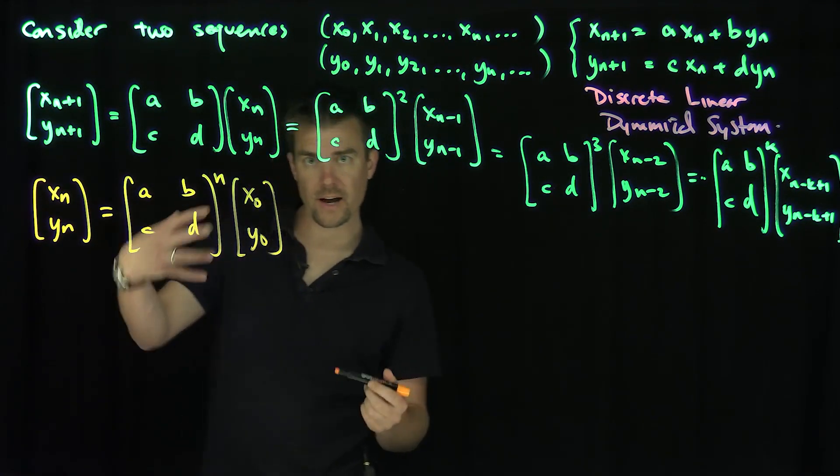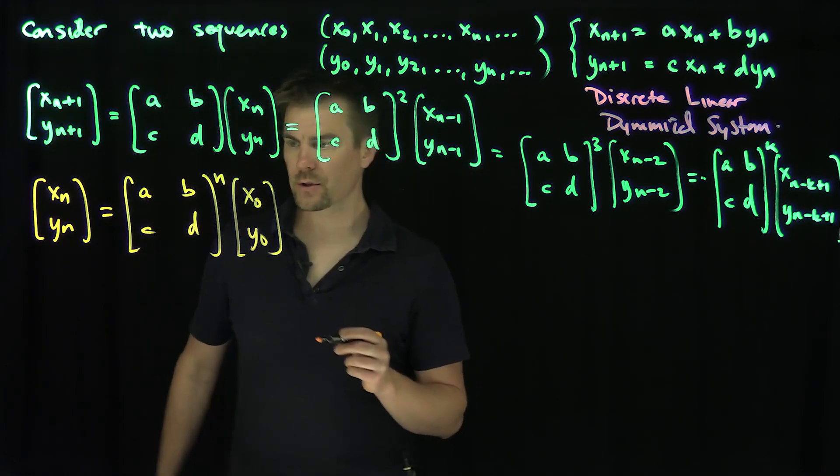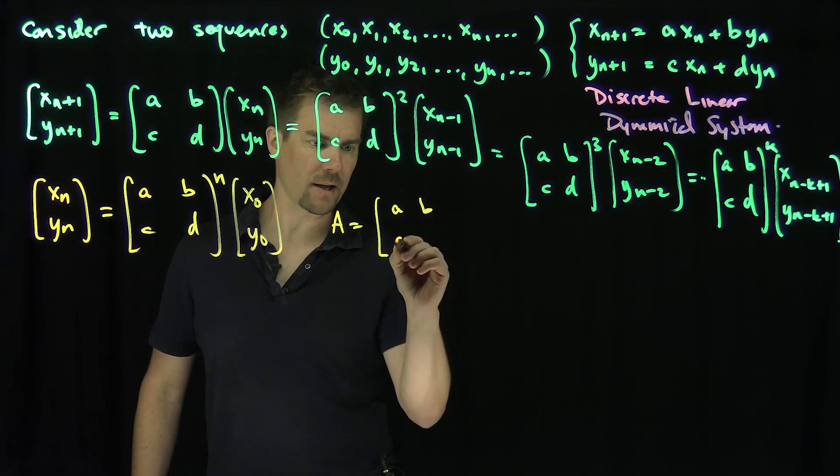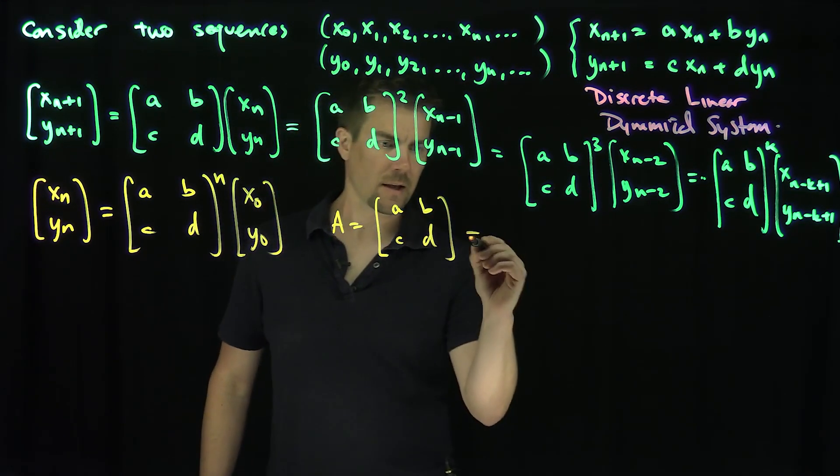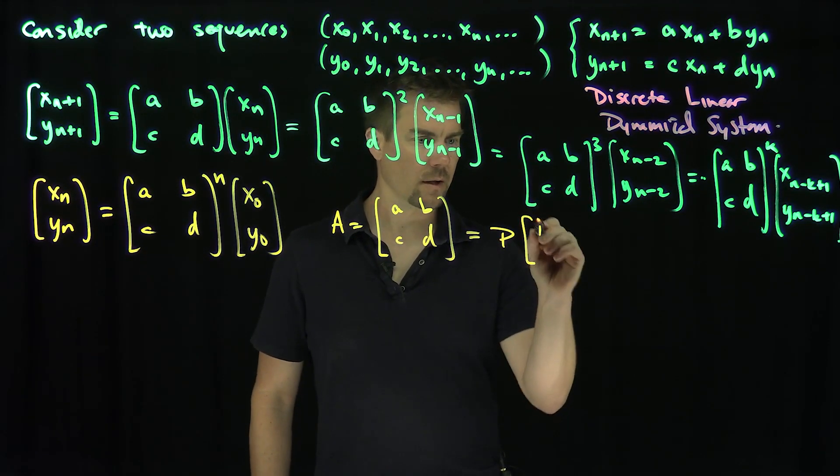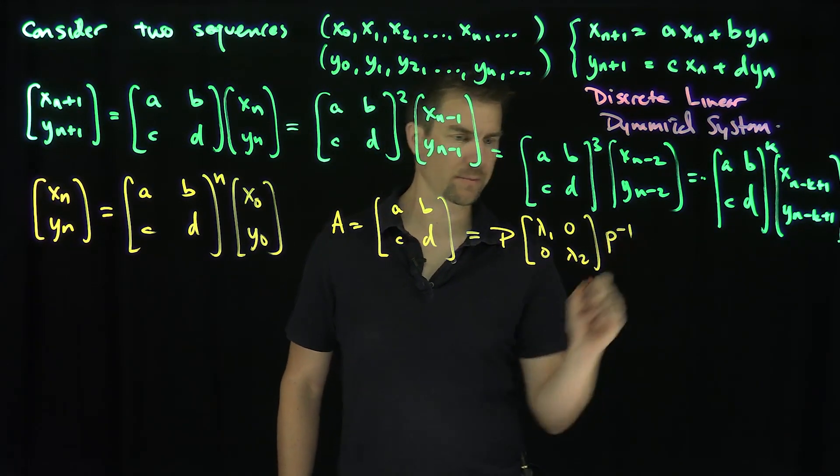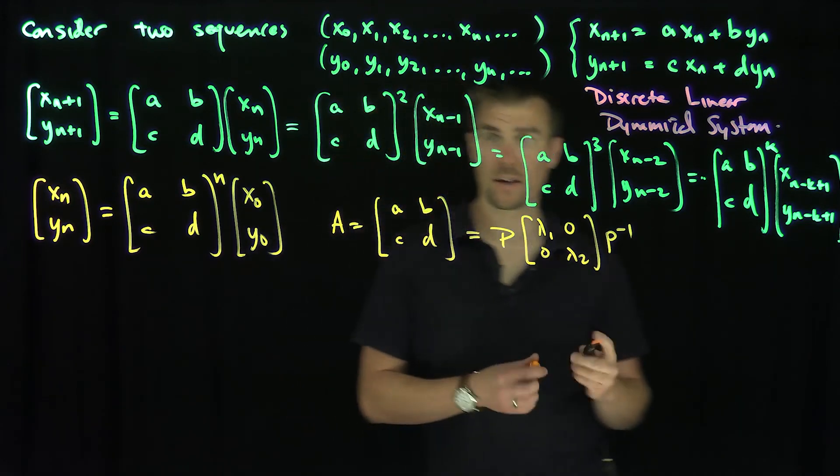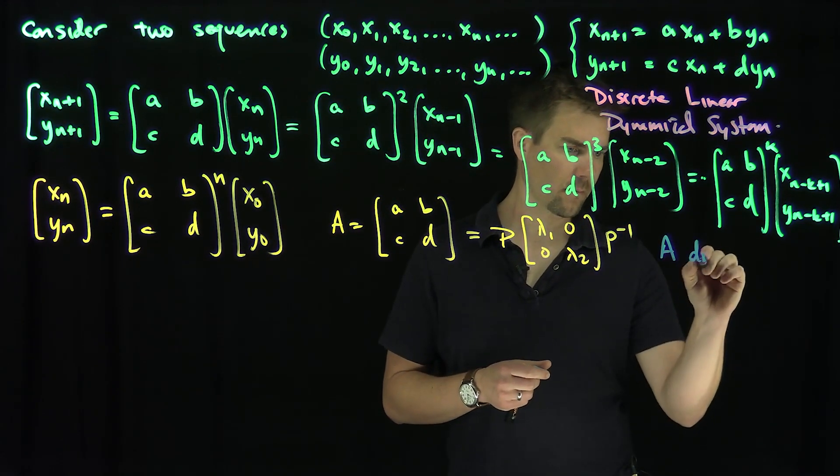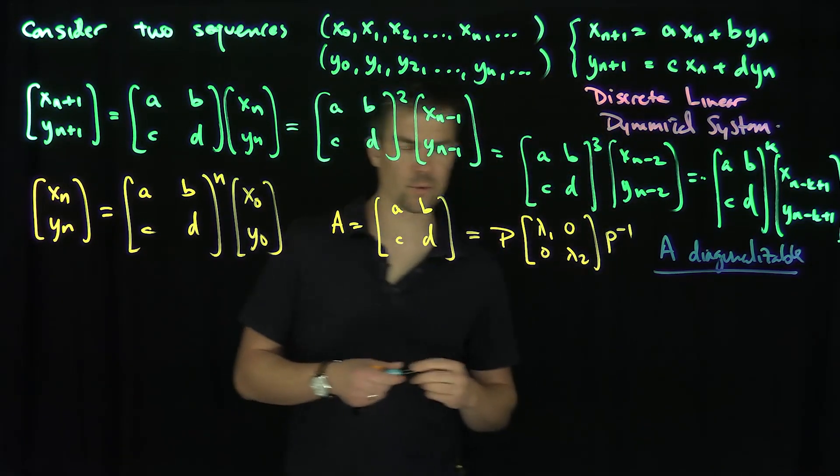So now the question becomes when can I efficiently do this calculation for these discrete systems? Well, suppose that A, which is A, B, C, D, is diagonalizable, so I can write this as P, lambda 1, 0, 0, lambda 2, P inverse. And if we can diagonalize A, A is diagonalizable.